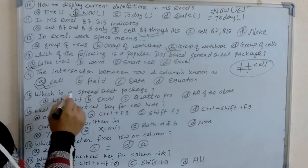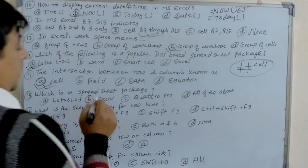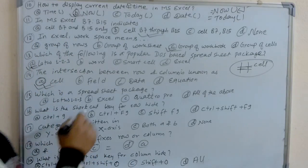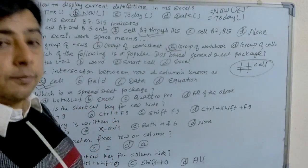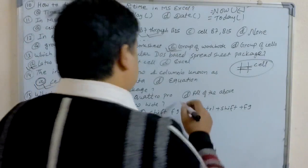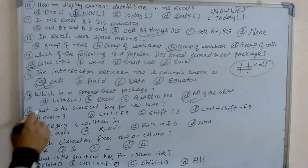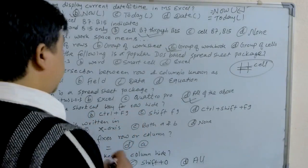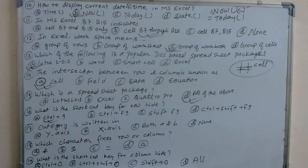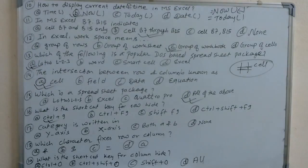Which of the following is a spreadsheet package? Lotus 1-2-3 is a spreadsheet package, Excel is also an electronic spreadsheet package, and Quattro Pro is also a spreadsheet package. So the answer is 'all of the above.' The shortcut key for row height is Ctrl+9. Pressing Ctrl+9 is used for row height in MS Excel.